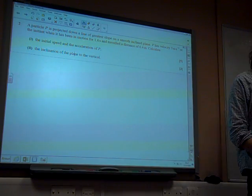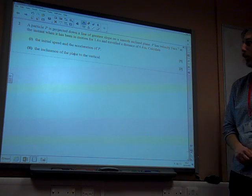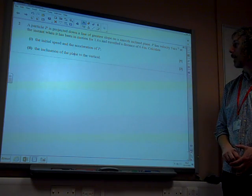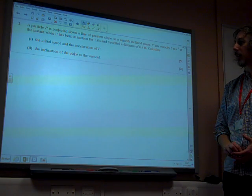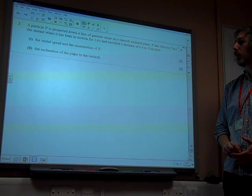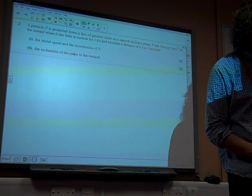Okay, we're on question 2. A particle P is projected down a line of greater slope on a smooth inclined plane. P's velocity is 5 at the instant when it's been in motion for 1.6 seconds and travelled a distance of 6.4. Calculate the initial speed and acceleration of P.